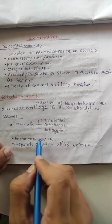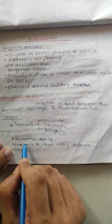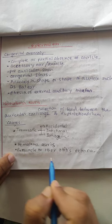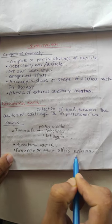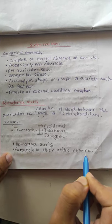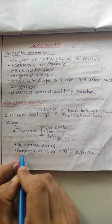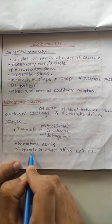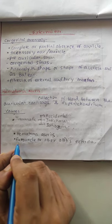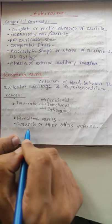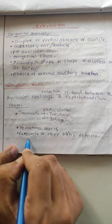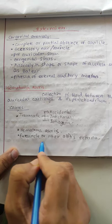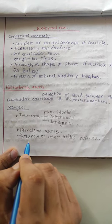Hematoma Auris can also be associated with furuncle or otitis externa. A furuncle is a staphylococcal infection of the hair follicle in the external auditory meatus — this is the same as a furuncle.